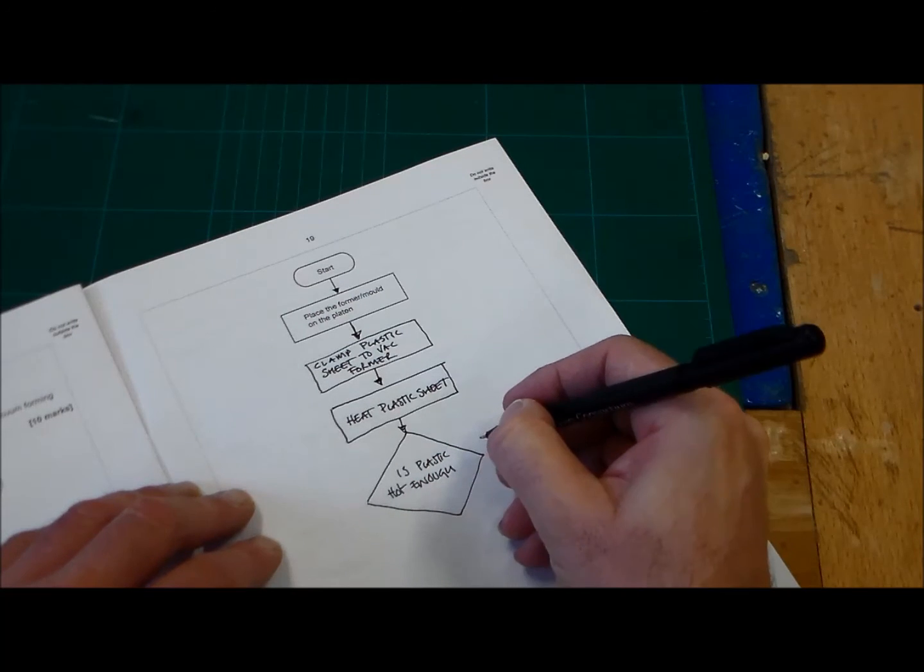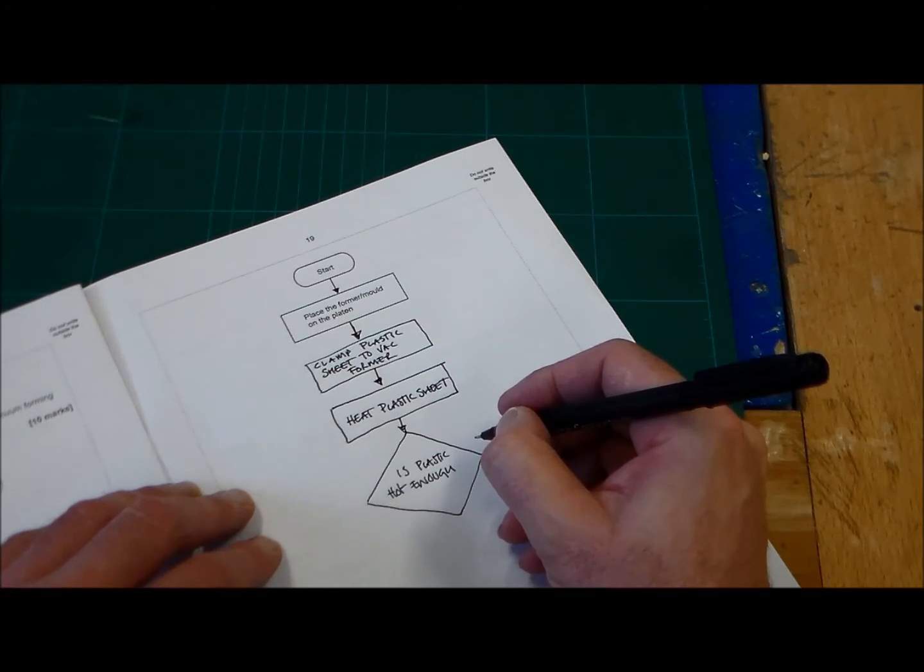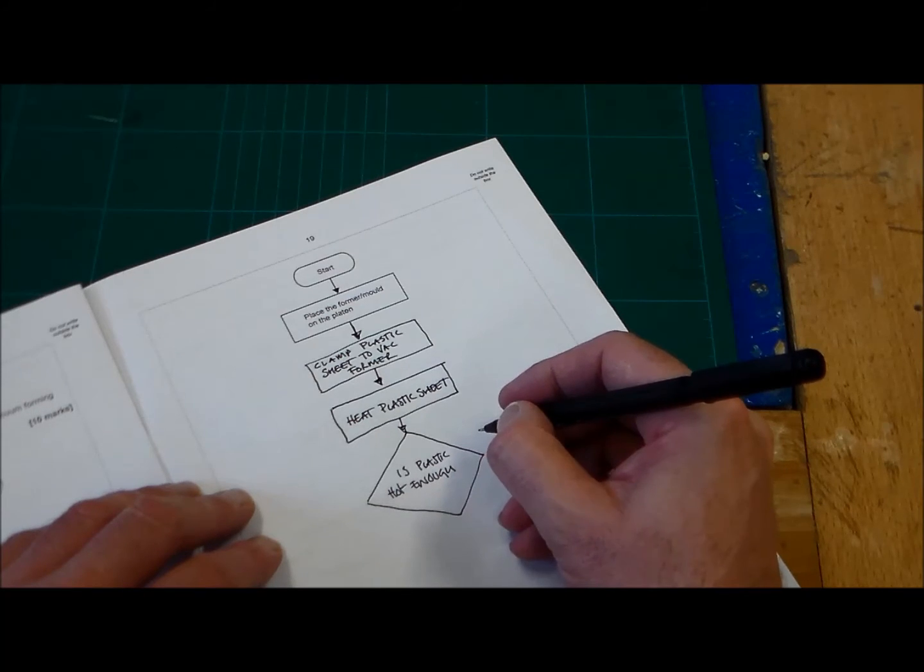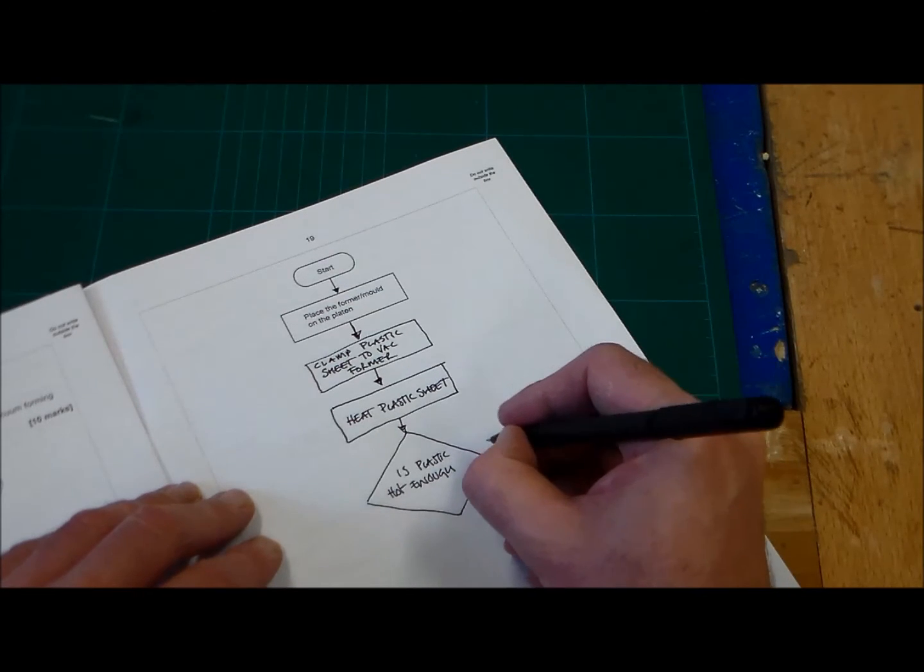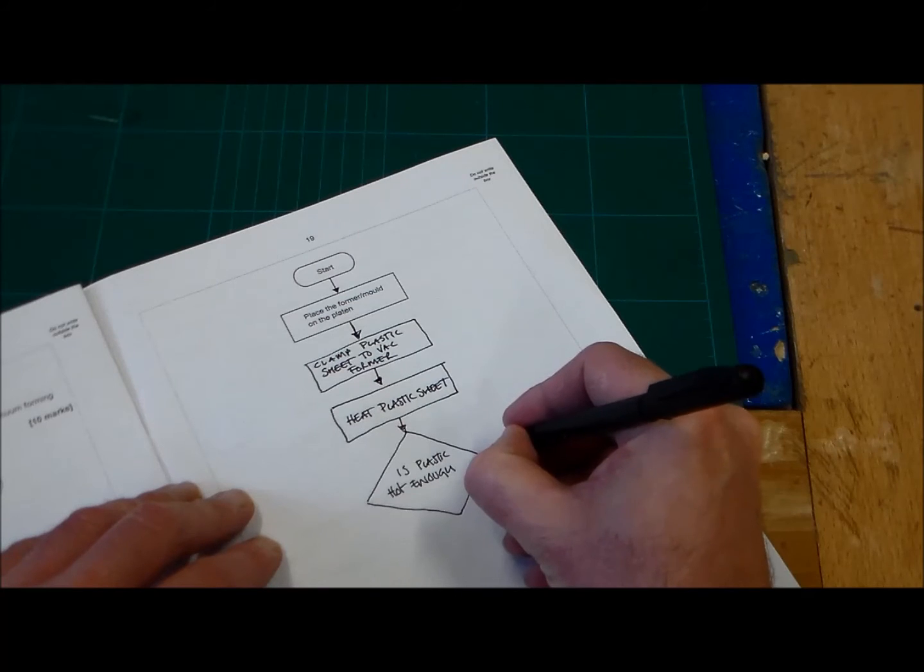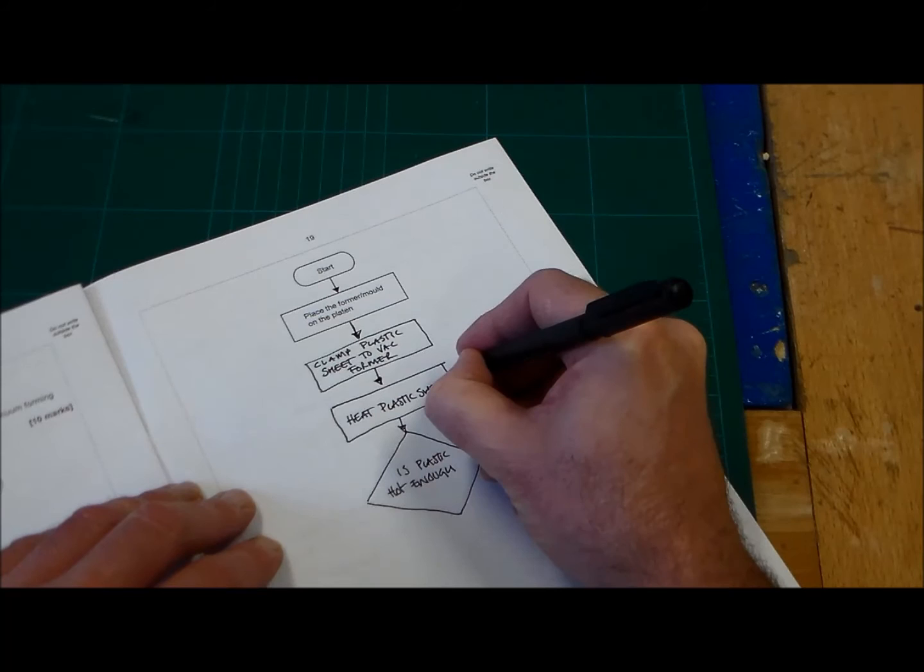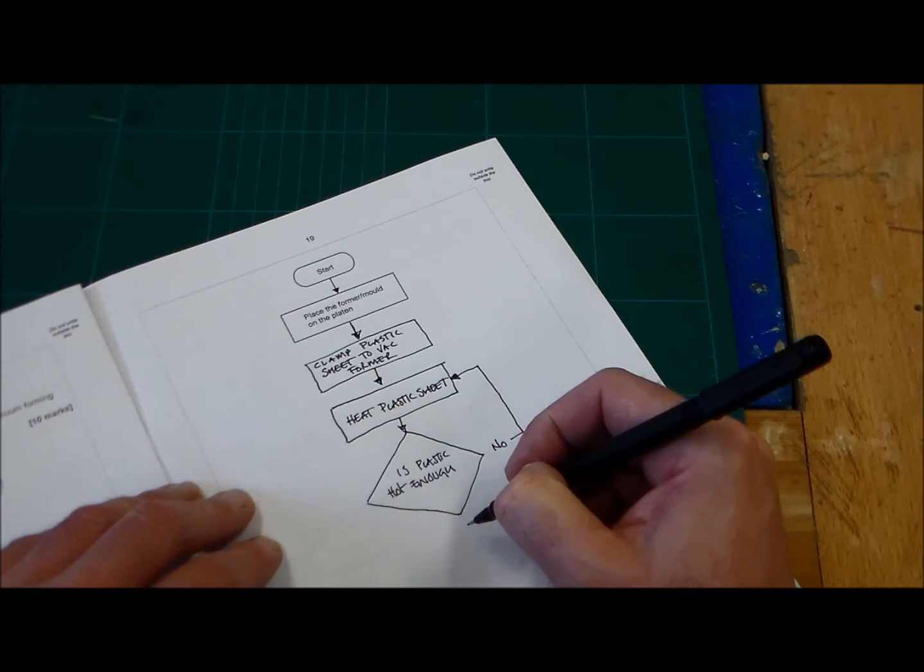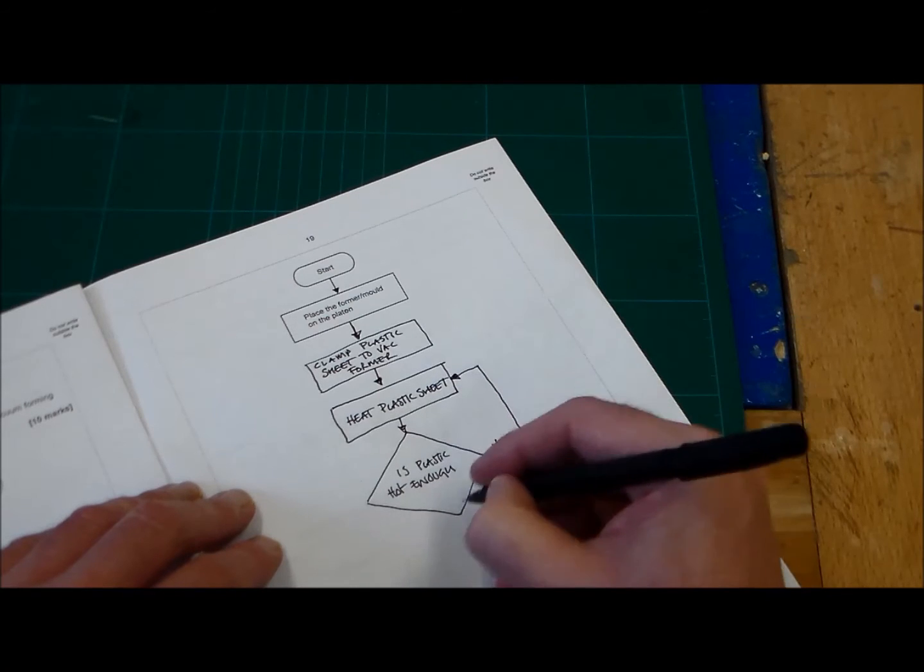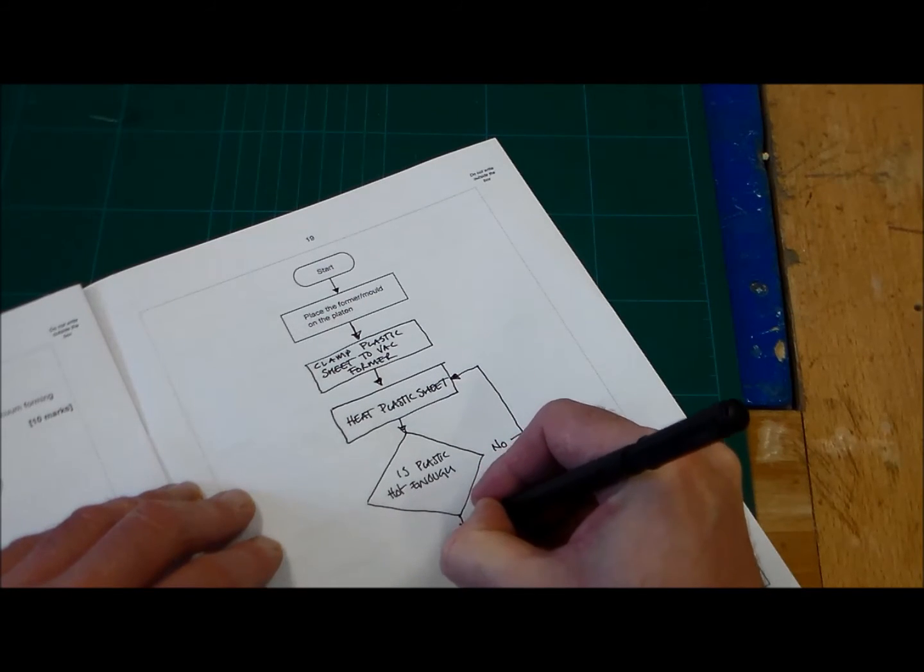And obviously here, to gain an extra mark here for the flow arrows or the return arrow, we need to say no. So no, obviously, if it's not hot enough, then there would be a return arrow here in the flow diagram going up to signify that we continue to heat the plastic sheet. So there it is. And of course, then down here, we've got a yes.